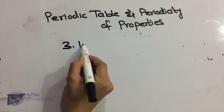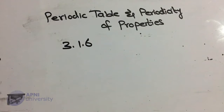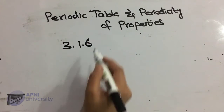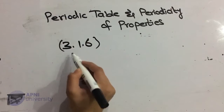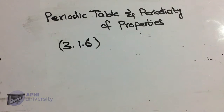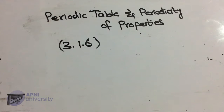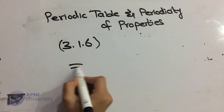Next topic hai valence shell electronic configuration and position of an element in the periodic table. You can determine the valence shell electronic configuration of an element from its position in the periodic table. Basically, kisi bhi element ki valence shell electronic configuration hum uski position ke according determine kar sakte hain periodic table mein.